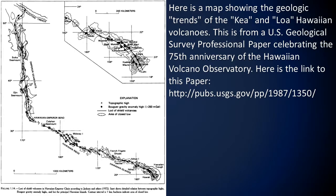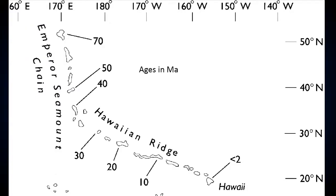Here is a map showing the geologic trends of the Kea and Loa Hawaiian Volcanoes, from a U.S. Geological Survey professional paper celebrating the 75th anniversary of the Hawaiian Volcano Observatory from 1987. This is the map we will be using for our plate motion calculations. We will be making distance measurements between islands and seamounts that have radiometric ages associated with them. Each island or seamount is labeled with a tick mark and a number matching the age of that location in millions of years, or Ma.